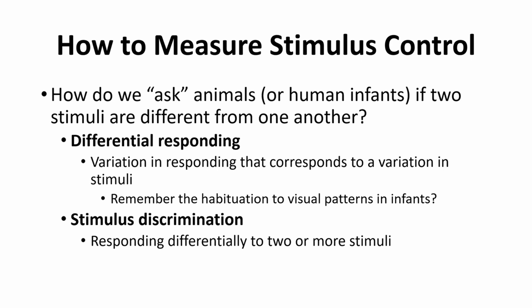If you are differentially responding, that means you are discriminating — you are discriminating between those two stimuli. We can talk about stimulus discrimination, where you respond differentially to two or more stimuli. This links back to stimulus control: if you do not discriminate between stimuli, then the behavior is not under the control of those stimuli. So if there is no discrimination, there is no stimulus control.